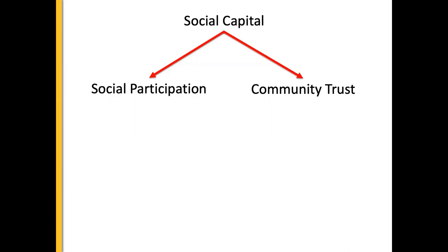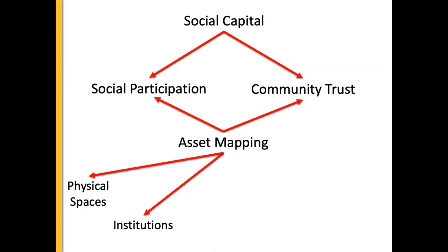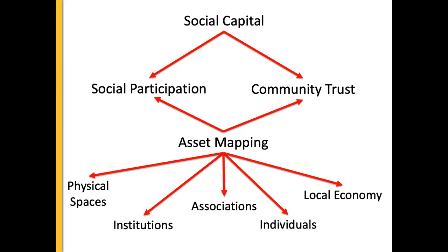We focus predominantly on social participation as something we can measure. But there's another concept that builds into both of these, which is asset mapping — identifying things within the community that can enable people to engage in social participation and social capital and help build community trust. These can be physical spaces such as parks, leisure centres, youth clubs, or institutions like schools and universities, associations such as groups or individuals who have knowledge and skills to run these sorts of groups, and local economies such as local budgets that put direct money into museums and community groups.